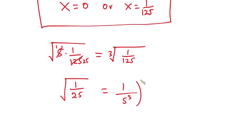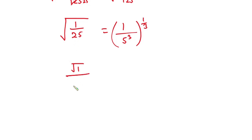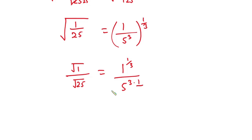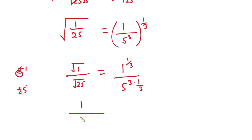On the right hand side, I can write 1 over 125 as 1 over 5 to the third power, raised to the power 1 over 3. So we have the square root of 1 over the square root of 25, which gives 1 over 5. And on the right: 1 to the power 1/3 is 1, and 5 to the power 3 times 1/3 simplifies to 5.